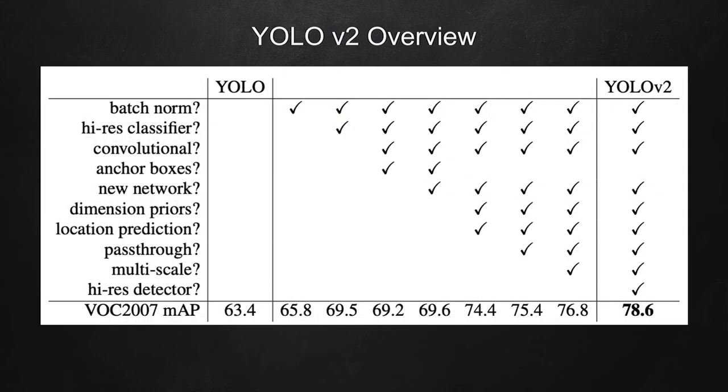Now in this table, it shows the ablation study of the techniques introduced in the paper. The original YOLO V1 model performance is shown in the bottom most row, the left most column. So on VOC 2007 dataset, it achieved mean average precision score of 63.4. And as more techniques are added to the YOLO V2 model from batch norm to high resolution detector, the performance goes up dramatically up to 78.6.